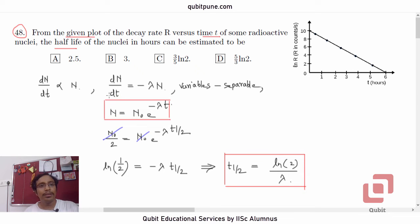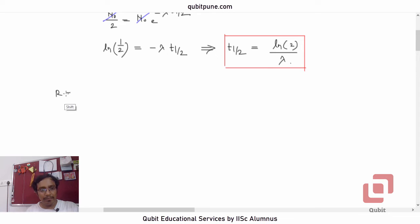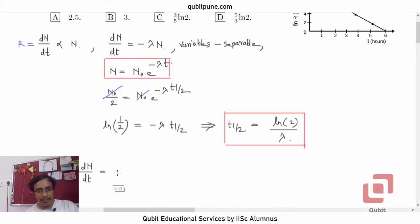Now, the graph doesn't actually deal with N, it deals with dN by dt, isn't it? The decay rate is actually this, dN by dt. So, let's now go for R. What will R be then? R is dN by dt. So it will be negative lambda N, where N is N naught e to the power negative lambda t.